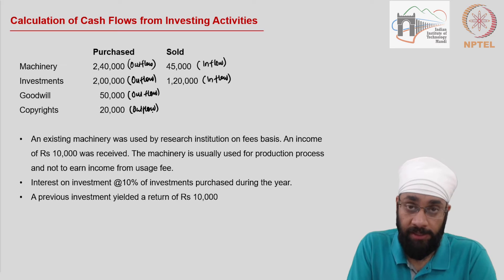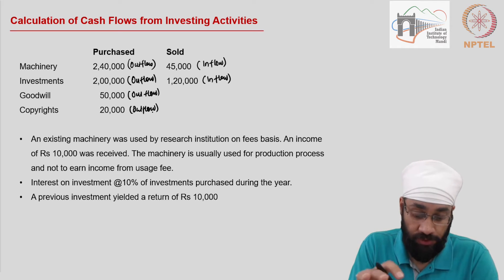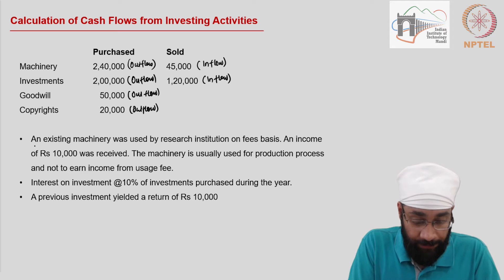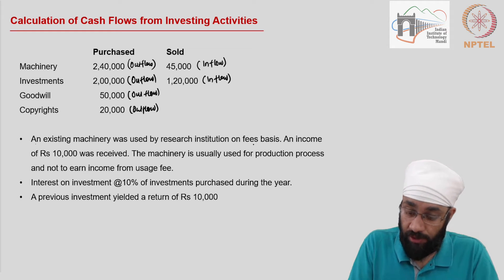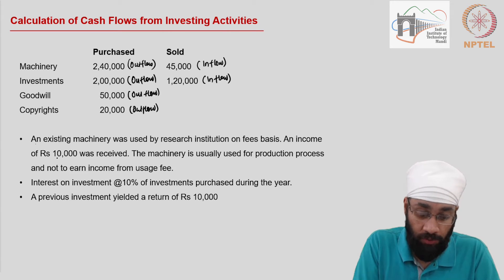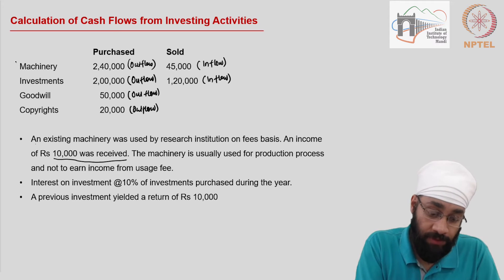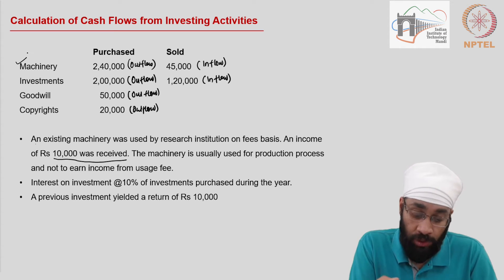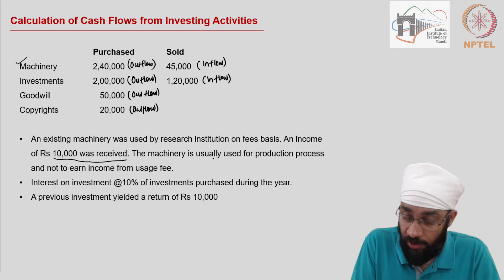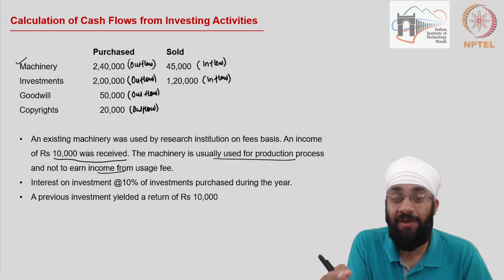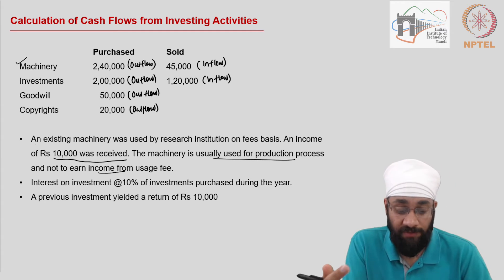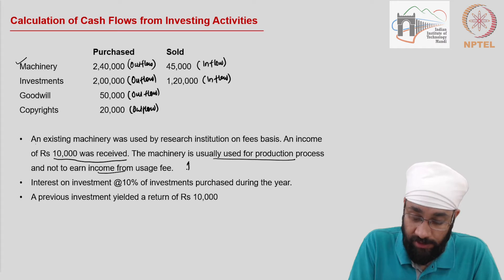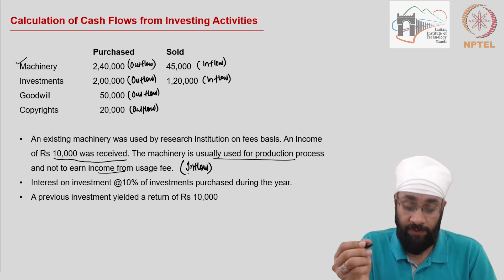So we can just directly take these numbers to the cash flow statement and post them there. Let us look at the other information as well. An existing machinery was used by a research institution on a fee basis and income of 10,000 was received. You rent it out to some external party — they use it and pay you a fee. The machinery is usually used for production, not to regularly earn such income, so this is an investing income, not an operating income. So 10,000 is an inflow as a result of investing activities.